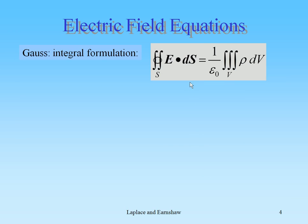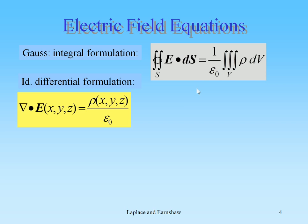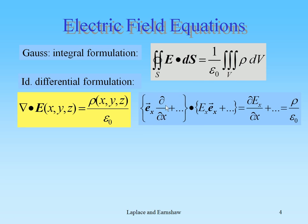The electric field equations. First we need the Gauss law, which is the surface integral over the normal component of the electric field, equal to the total enclosed charge density divided by epsilon naught. In differential formulation, the divergence of E is rho over epsilon naught. The divergence is given by d/dx plus the same for y and z, acting on the field components Ex, Ey, Ez, yielding dEx/dx plus dEy/dy plus dEz/dz.